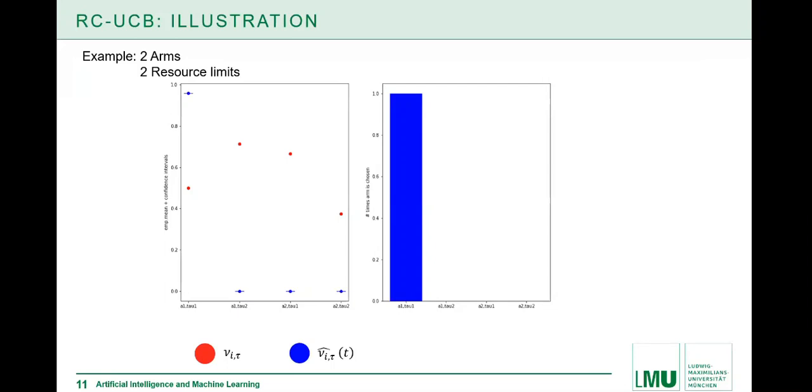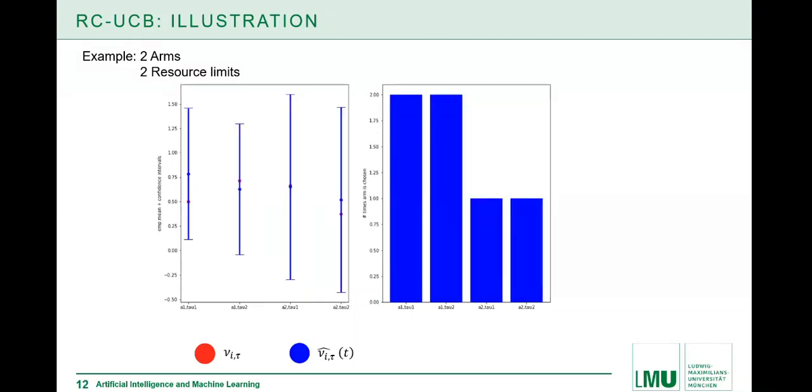To have an illustration and intuition how this works, let's consider the following simple example. We have two arms and two resource limits, so arm A1, A2, and two resource limits, tau1, tau2. You see here in red the true expected gains, so the optimal action would be to choose arm A1 with resource limit tau2. On the right hand side in the histogram, we keep track of how many times we have used an action. After choosing the first action, arm A1 and resource limit tau1, we have an update for the estimate, the blue point, and the others are initialized at zero.